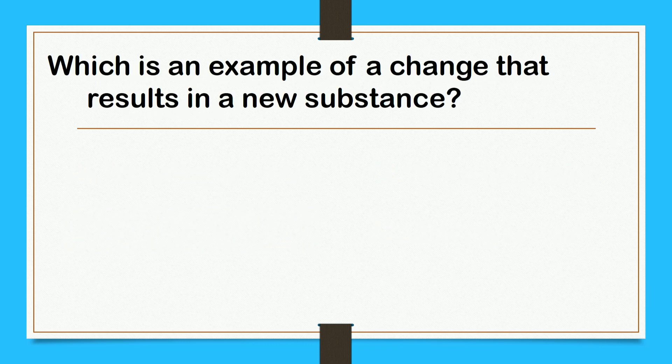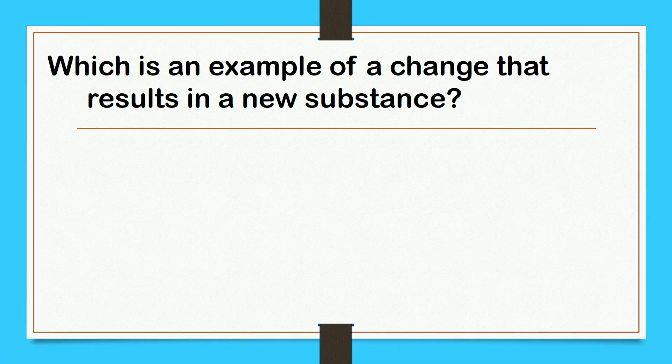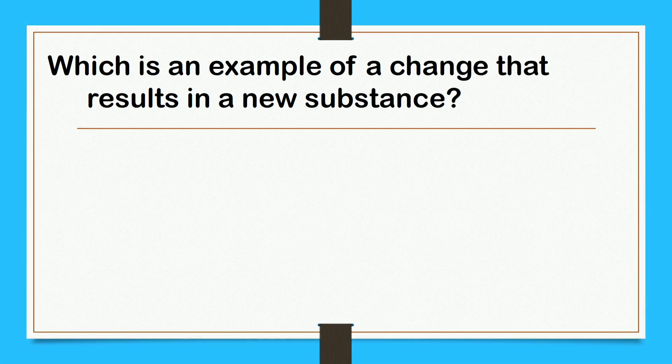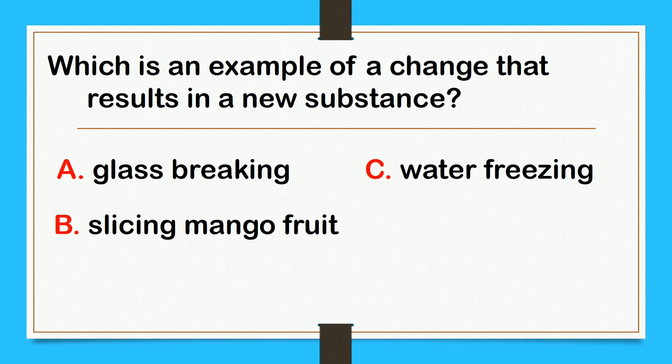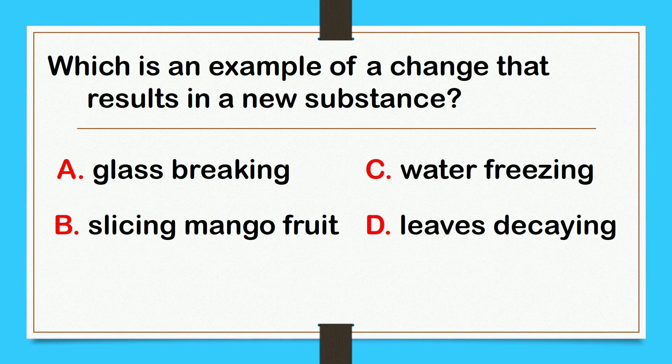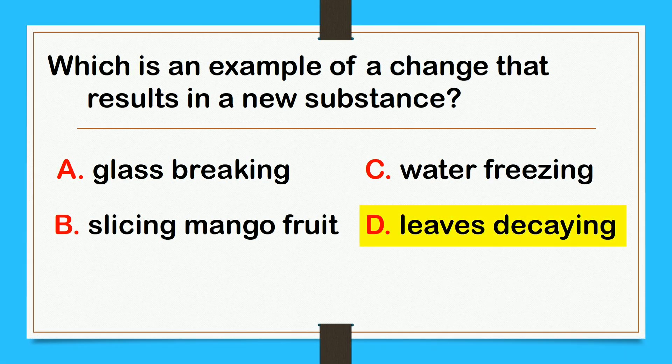Which is an example of a change that results in a new substance? Letter A, glass breaking. B, slicing mango fruit. C, water freezing. Or D, leaves decaying. The answer is letter D, leaves decaying.